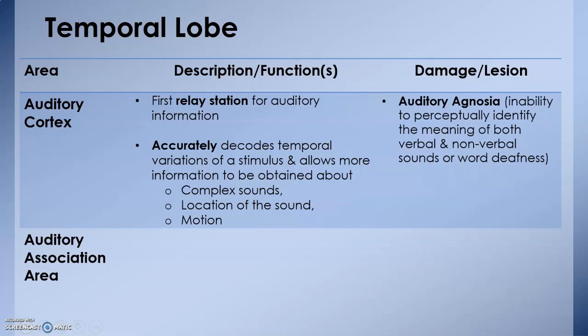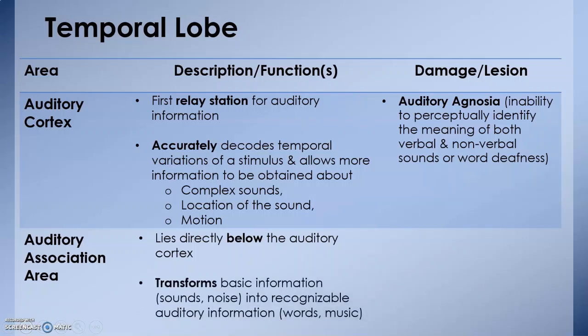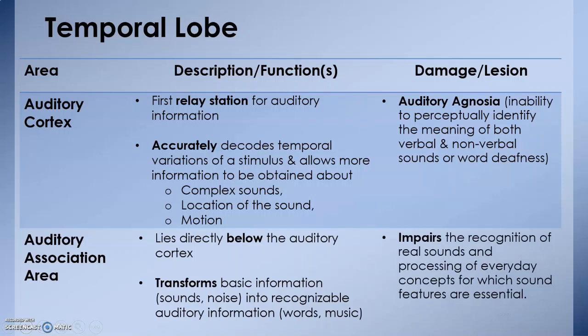Directly below the auditory cortex lies the auditory association area. What does it do? It transforms basic sensory information, such as noise or sound, into recognizable auditory information like words or music. So you're not just hearing the sound, you know what the sounds mean. Damage to the auditory association area impairs the recognition of real sounds and processing of everyday concepts for which sound features are essential.